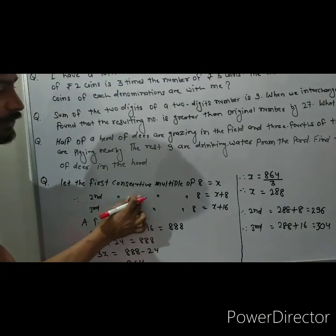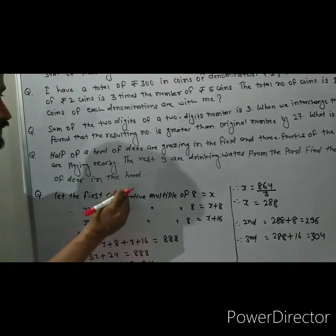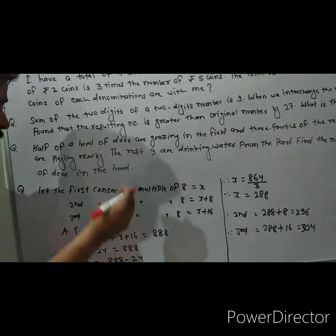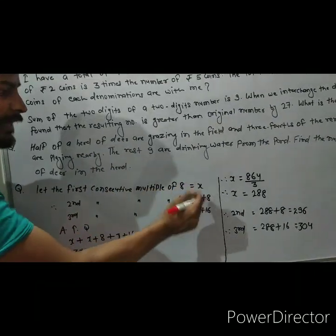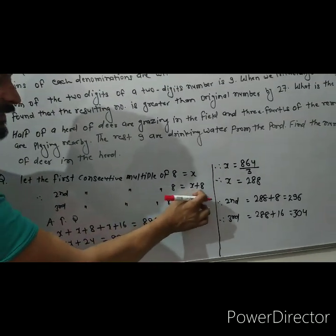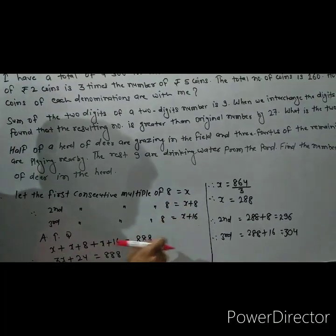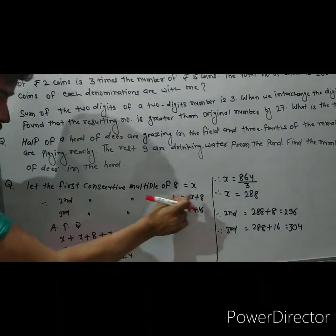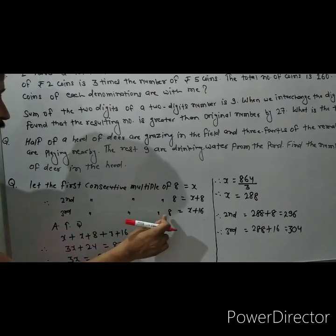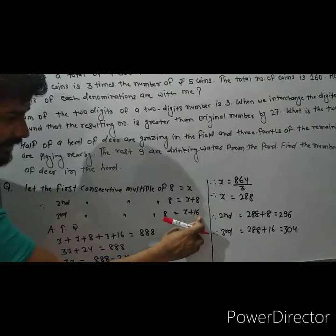Consecutive means lagatar — so if we add 8 to the first consecutive multiple, we get the second. Therefore the second consecutive multiple of 8 is x plus 8. And if we add 8 again, we get the third. Therefore the third consecutive multiple of 8 is x plus 16.